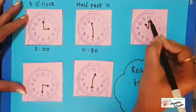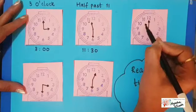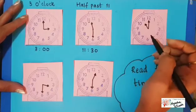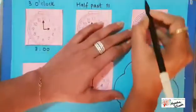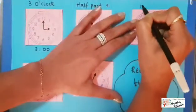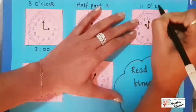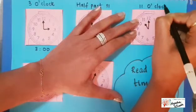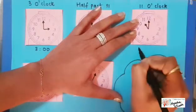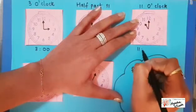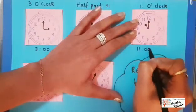Now this one. The long hand is on 12 and the short hand is on 11. So what's the time? Easy — it's 11 o'clock, also written as 11:00.